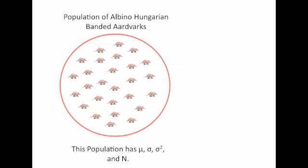Let's start with a population of my favorite creatures, the albino-hungarian banded aardvarks. Of course this population has a mean of mu, a standard deviation of sigma, and the variance is simply the square of the standard deviation. And of course there are a number N — we have no idea how many of these aardvarks there might be.